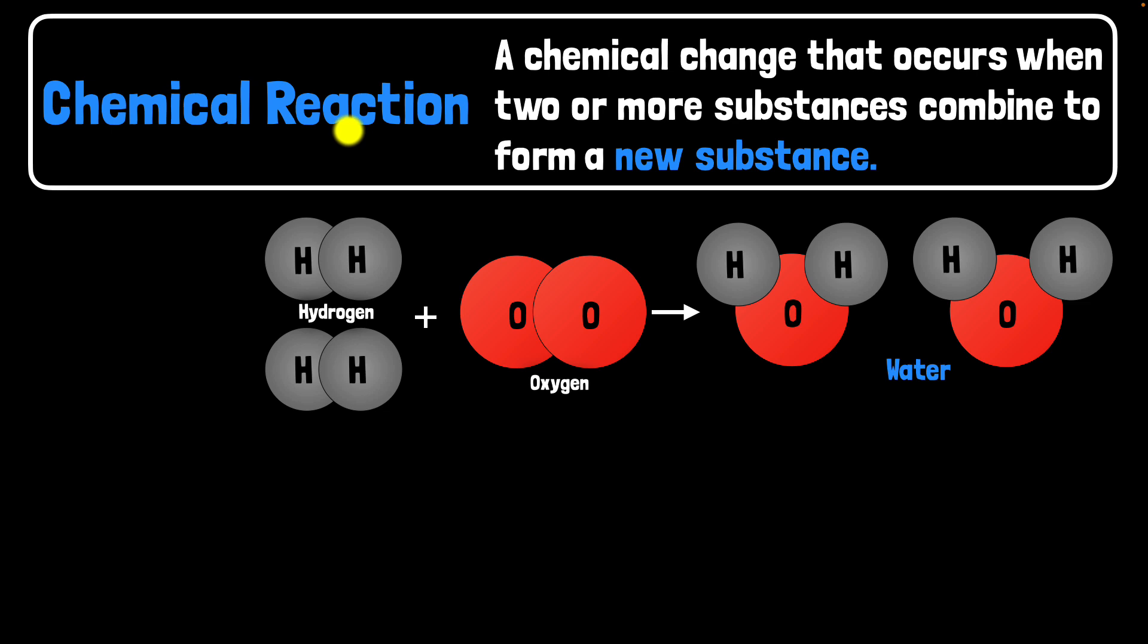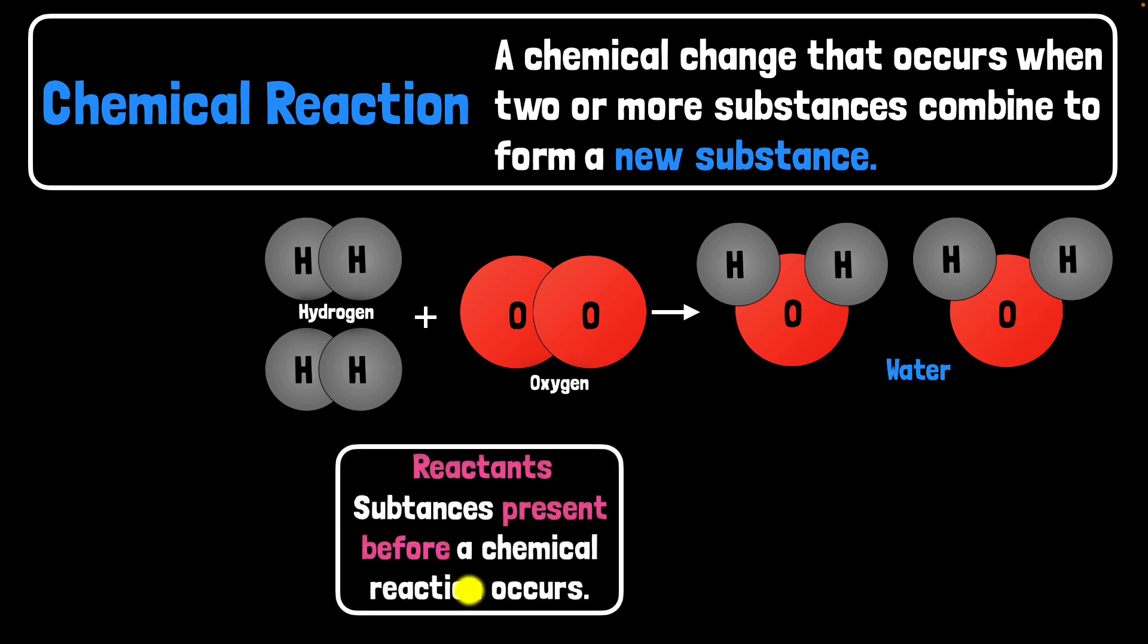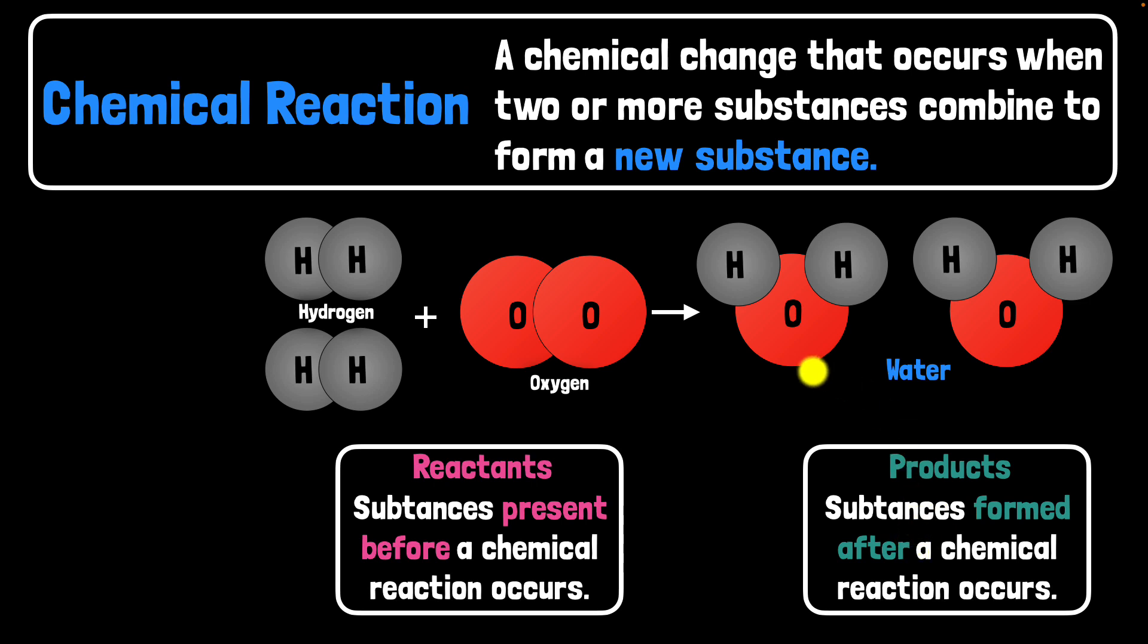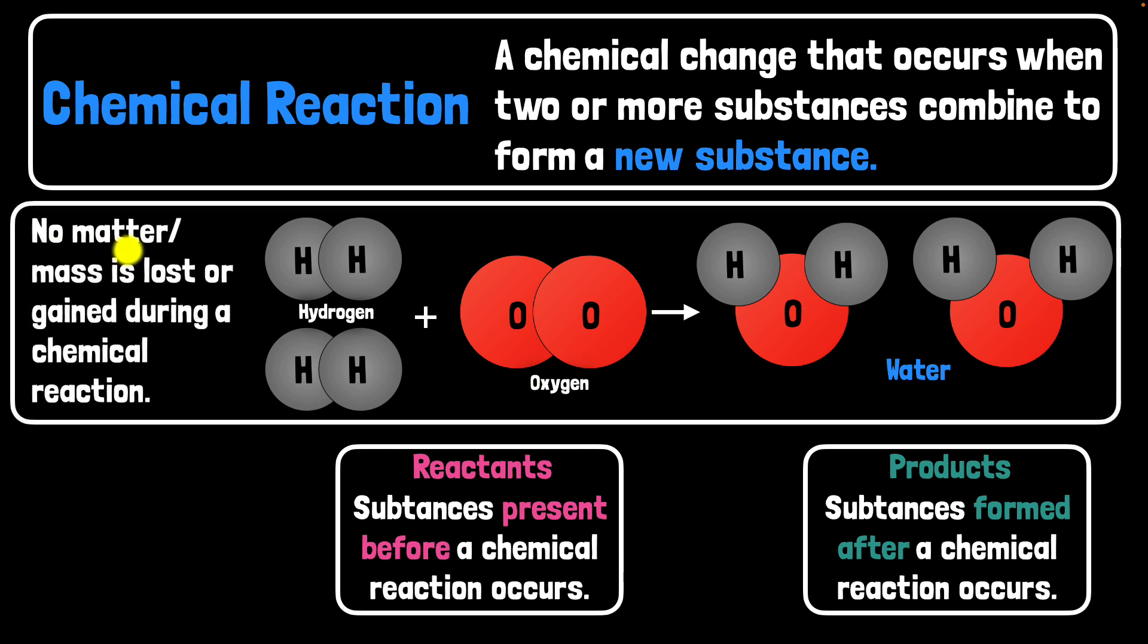So putting it all together: a chemical reaction is a chemical change that occurs when two or more substances combine to form a new substance. How does it happen? It's not that new atoms are being created. No, no—atoms are just rearranging. You'll get different arrangements of atoms. And substances that were present before the chemical reactions are called reactants, and the substances after the chemical reactions are called the products. And because no new atoms are created—it's just a rearrangement—there is no matter or mass that is lost or gained during a chemical reaction.